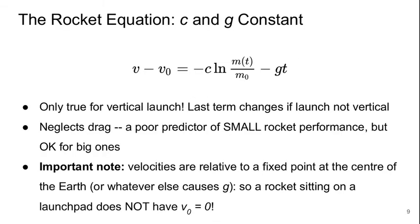In our rocket equation we simplify by taking c and g to be constant. And then we end up with a much simpler equation, which we call the rocket equation: the velocity minus the initial velocity equals minus c times the natural logarithm of m(t) over m₀ minus gt. This is only accurate for a vertical launch. This last term, this gt term, would change if the launch isn't vertical.